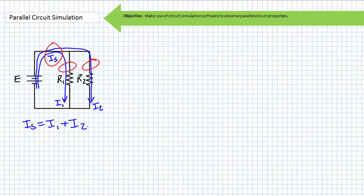Start thinking now of how you'd wire this up not only with a simulator, but also using real-world components and instrumentation. My sincere advice when using circuit simulation software is: one, place all components and indicators on the blank workspace prior to wiring anything together; and two, incorporate ammeters and components in series first before placing voltmeters in parallel as a final step.